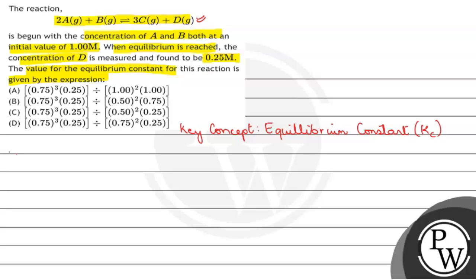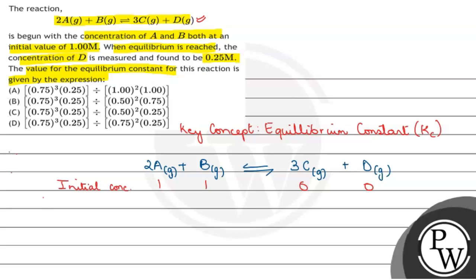तो इसे find out करने के लिए, पहले हम reaction लिख लेंगे जो हमें provided है, which is 2A plus B gives 3 moles of C and D. इसके हम initial concentration देख लेते हैं — initial concentration of A is given as 1 molar and B is also given as 1 molar. Initially products present नहीं होंगे, तो इसको हम 0 लिख लेते हैं. At equilibrium, हमें given concentration of D is 0.25 molars.